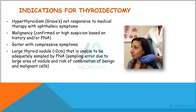What are the indications for thyroidectomy? A thyroidectomy is the surgical removal of the thyroid gland, either in whole or in part. Some of the indications for this procedure are: hyperthyroidism, specifically Graves' disease not responsive to medical therapy and having ophthalmic symptoms such as exophthalmos; malignancy that is either confirmed or high suspicion based on history or fine needle aspiration; and goiter which has compressive symptoms, large thyroid nodules greater than 2 centimeters, and is unable to be adequately assessed by FNA.